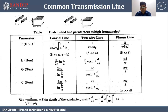Capacitance: for coaxial line, C = 2π ε / ln(b/a); for two-wire line, C = π ε / cosh⁻¹(d/2a); for parallel line, C = ε ω/d. Note: δ = 1/√(π f μ_c σ_c), which is the skin depth of the conductor.